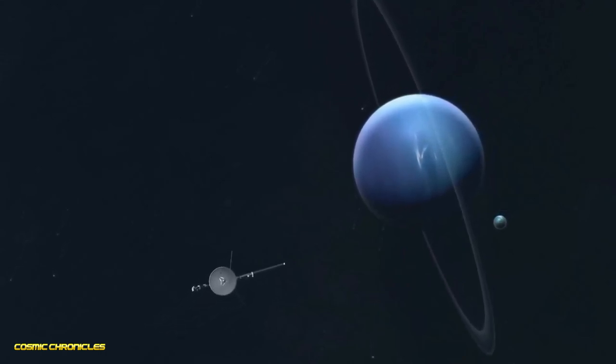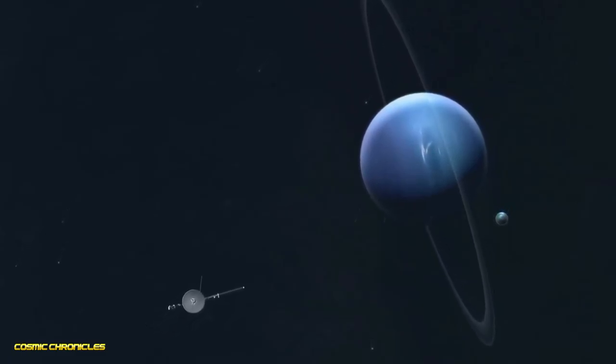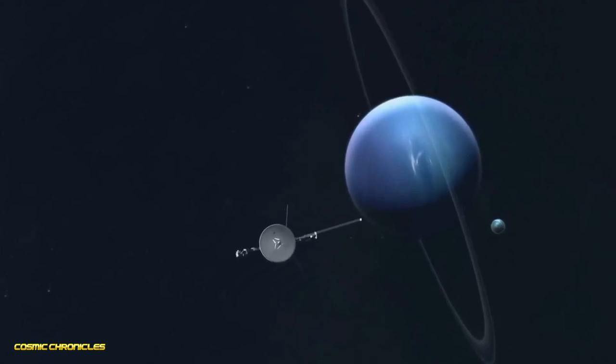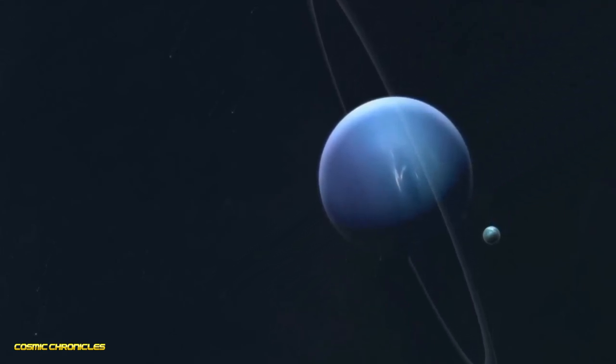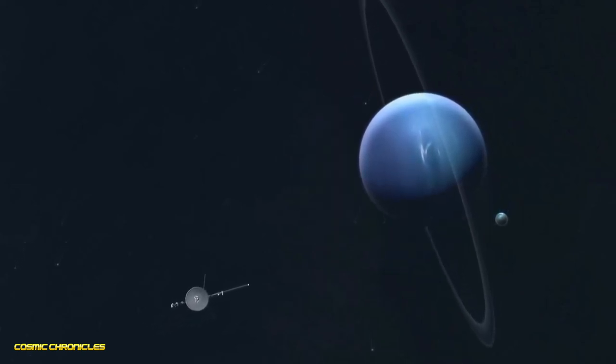The probes also gave us our first glimpses of the outer solar system's icy giants, Uranus and Neptune. Voyager 2 flew past Uranus in 1986, revealing its tilted axis and faint rings. Three years later it reached Neptune, capturing stunning images of its blue atmosphere and discovering six new moons. These encounters were game changers, showing us that the outer solar system was not a barren wasteland but a place of wonder and activity.